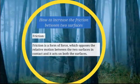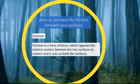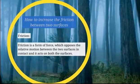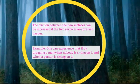Let us see how we can increase the friction between two surfaces. First, let us see what is friction. Friction is the drag experienced by the body when force is applied on it. Friction tries to oppose the action of applied force. The friction is due to the interlocking of irregularities in the two surfaces which slide with respect to each other.